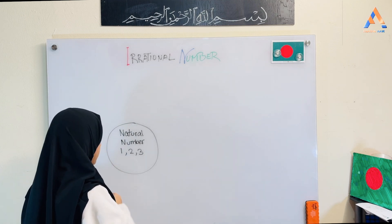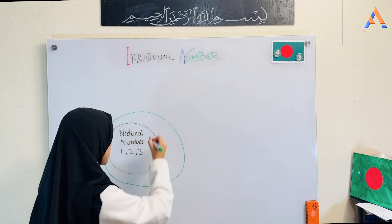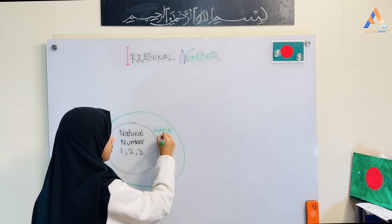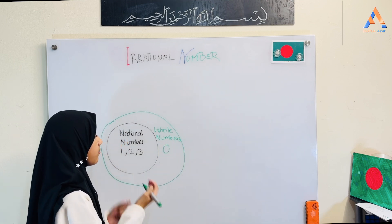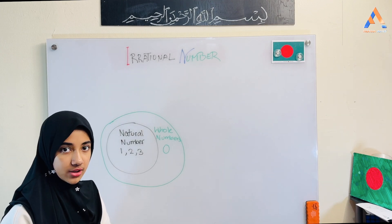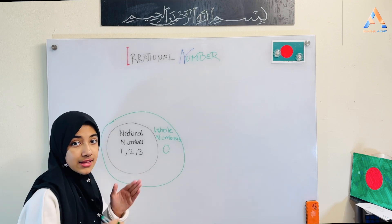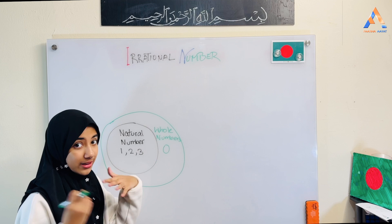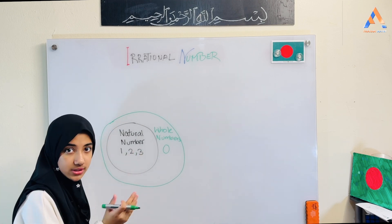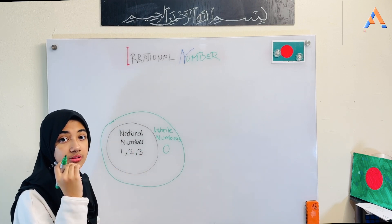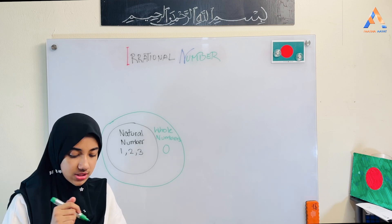We will see the whole numbers. Whole numbers — for example, zero, one, two, and three. The whole number set is not only zero, but also includes the natural numbers: one, two, and three. So natural numbers are one, two, and three. Whole numbers are zero, one, two, three, and so on towards the positive direction.